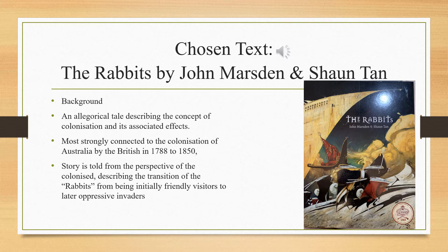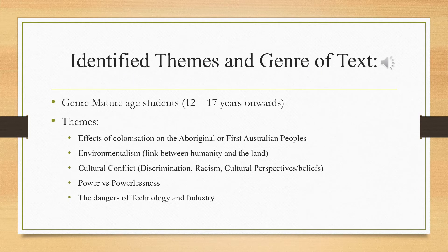It is most strongly connected to the colonisation of Australia by the British in 1788 to 1850, and the subsequent interactions between the British and the Aboriginal or First Australians people, both before, during and after colonisation. From a reader's viewpoint, the story is told from the perspective of the colonised, describing the transition of the Rabbits from being initially friendly visitors to later oppressive invaders.